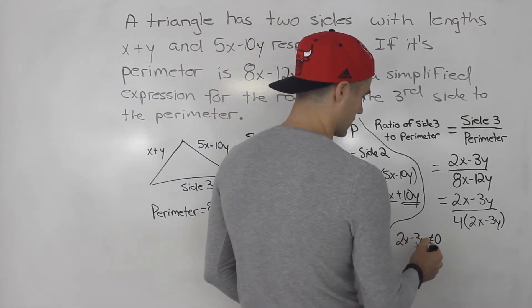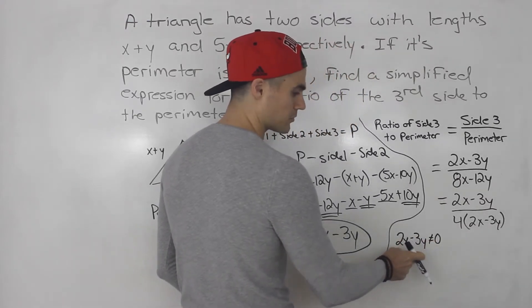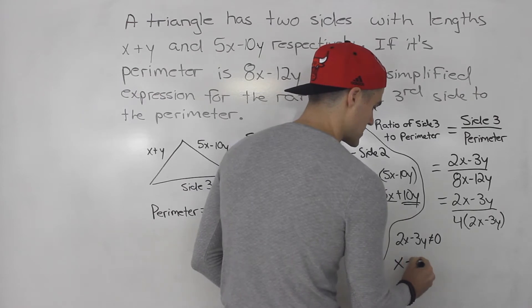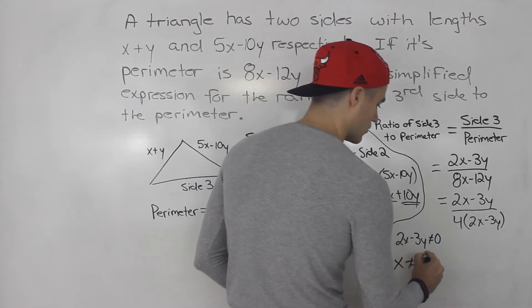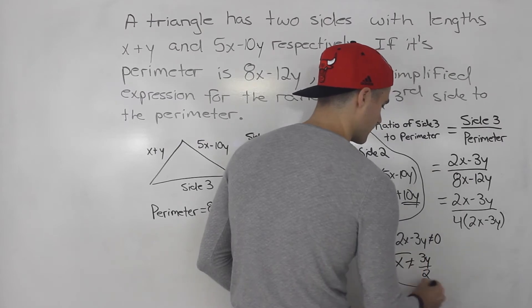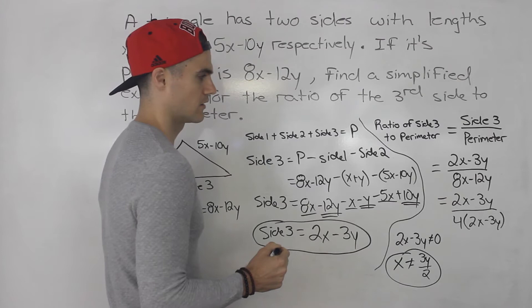So because there's two variables, you could isolate for one of them. I'm going to isolate for x. So this means that x cannot equal 3y over 2.